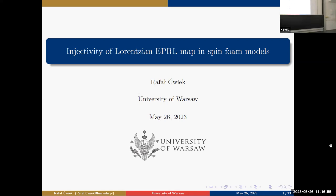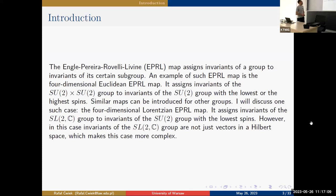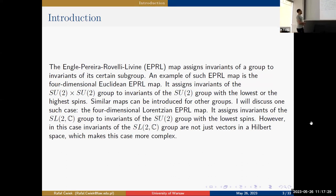I will talk about injectivity of this map. First of all, what is the EPRL map? The EPRL map assigns invariants of a group to invariants of its certain subgroup. An example is the four-dimensional Euclidean EPRL map, which assigns invariants of the SU(2)×SU(2) group to invariants of the SU(2) group with the lowest or highest spins.